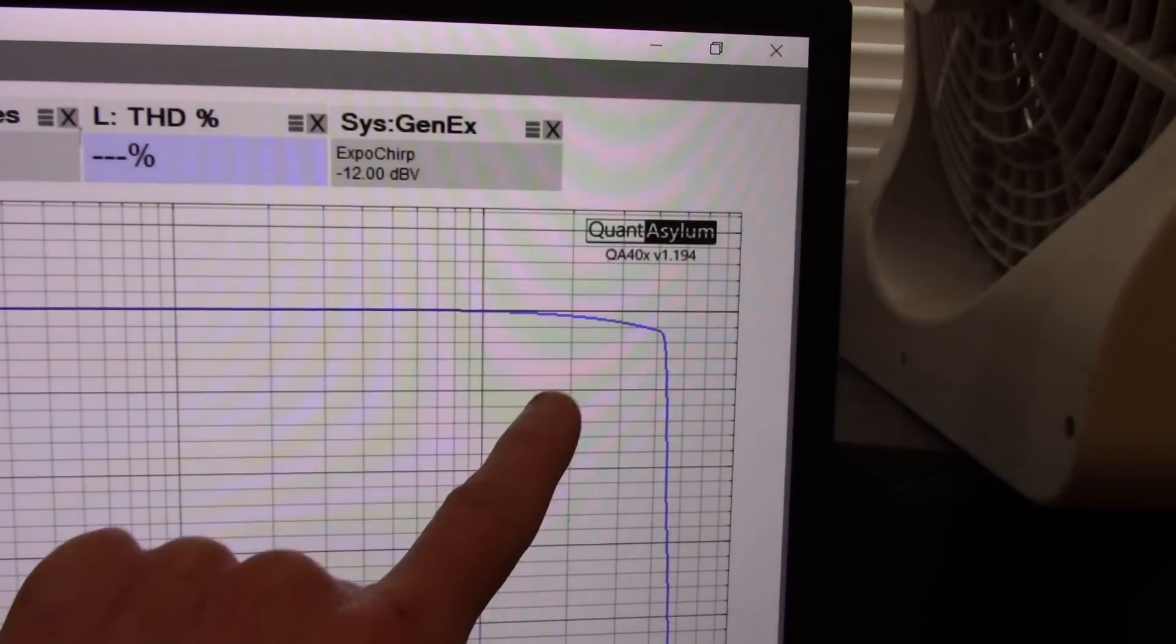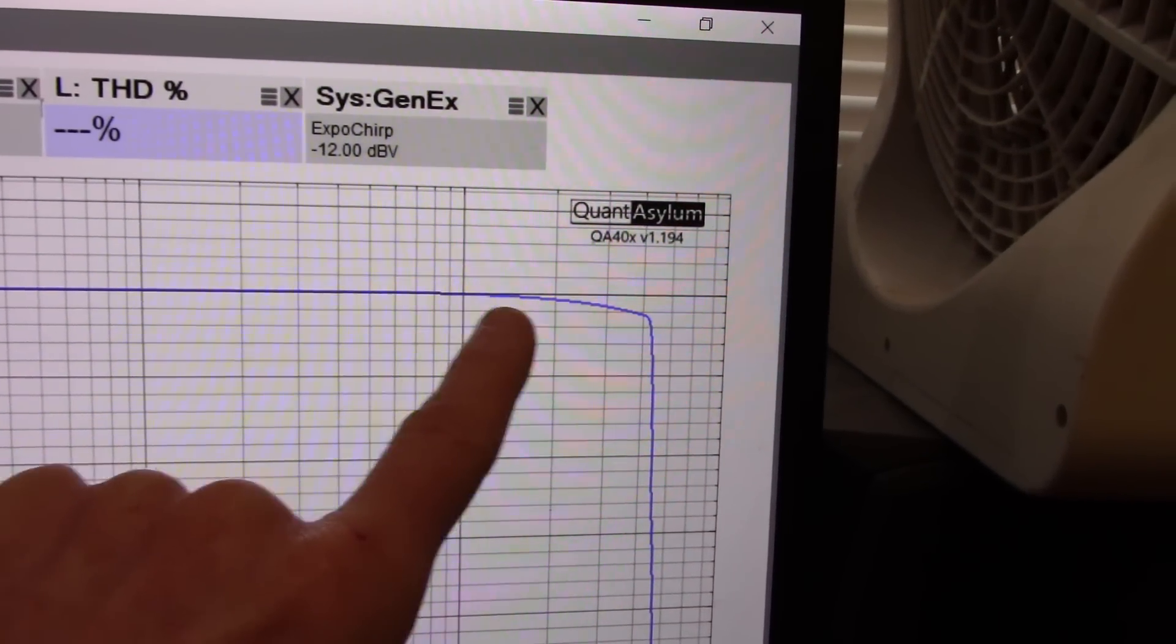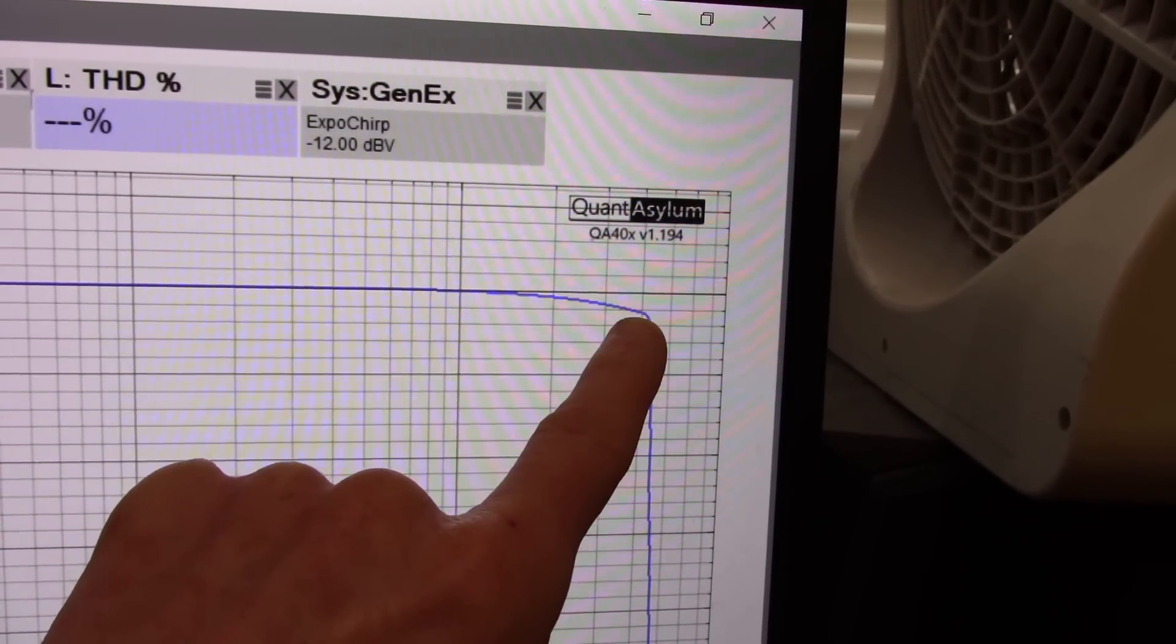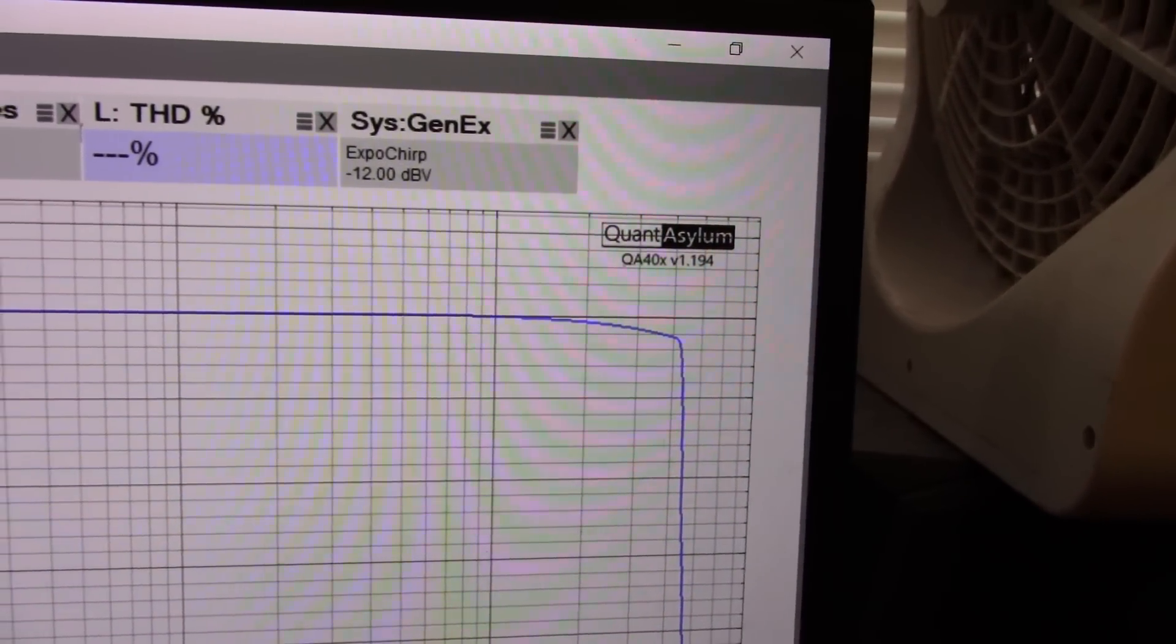And on the other end of the scale, 10k, 20, 30, 40k we're a fifth of a dB down. I mean that's excellent.